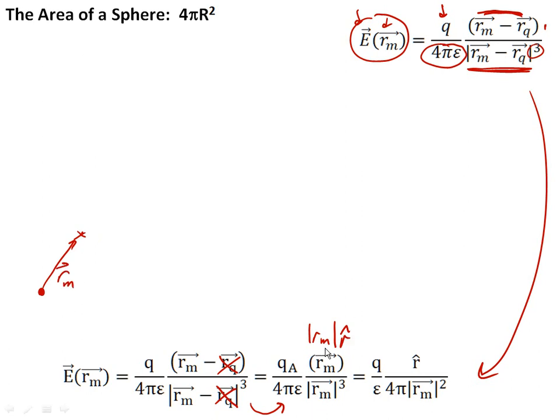We can write that as the magnitude of that times a unit vector pointing in that direction because we know our idea of unit vectors. This cancels out of the numerator, this cube in the denominator turns to a square. And so I'm ending up, if I move my 4π around, with this equation right here.